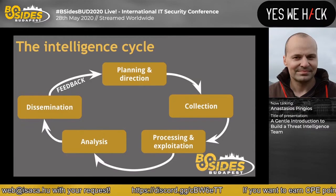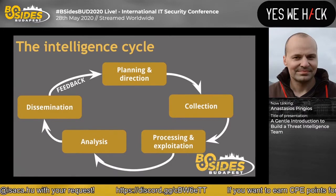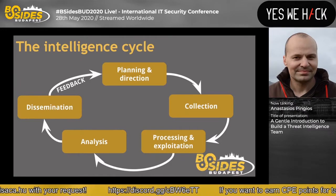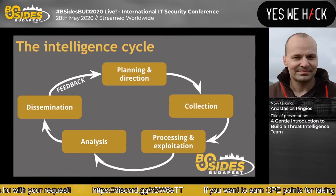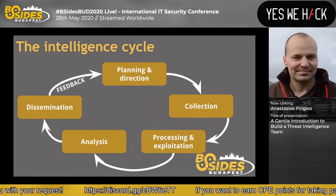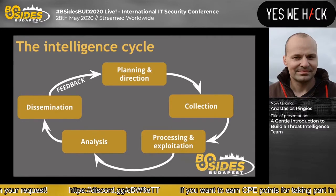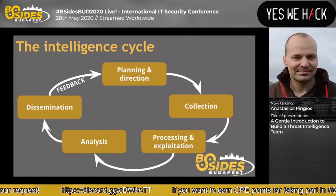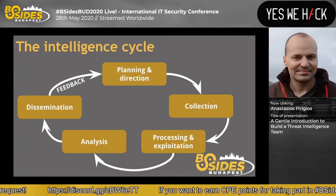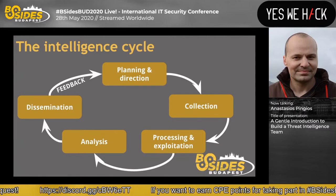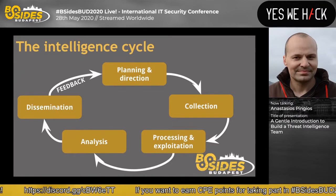Now let's talk about the intelligence cycle I mentioned briefly earlier — the guiding line for most intelligence operations. The cycle is relatively simple. The important part to remember is the feedback loop at the end. In general, you have planning, collection, processing and exploitation, analysis, dissemination, and feedback. I'm going to go quickly through each of the five stages to make it as clear as possible, especially if you're starting on that journey.